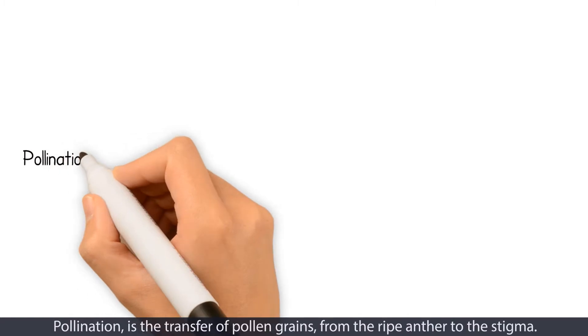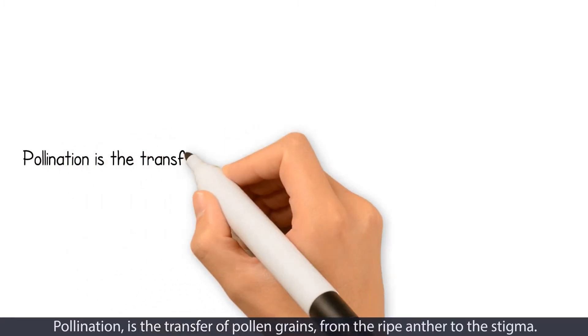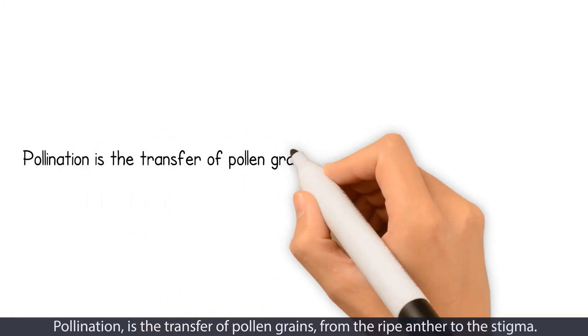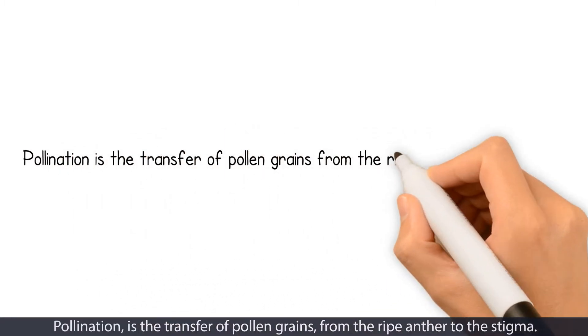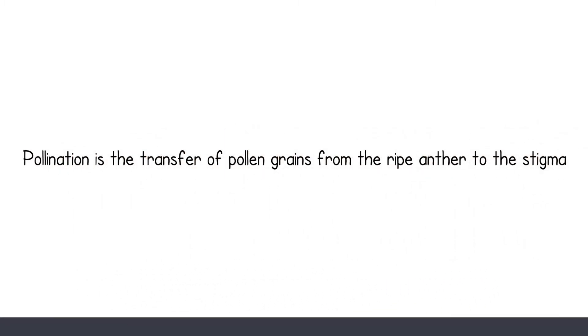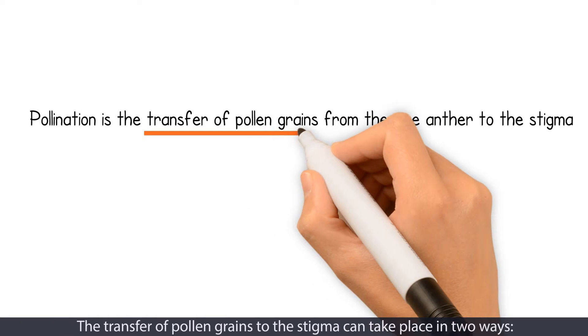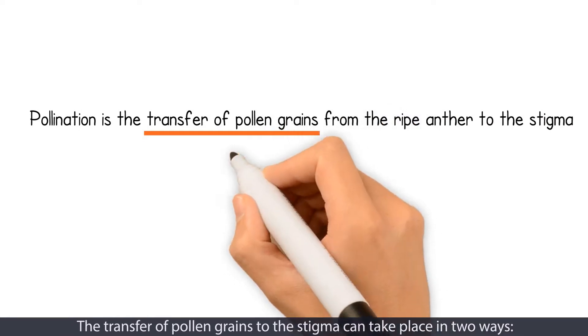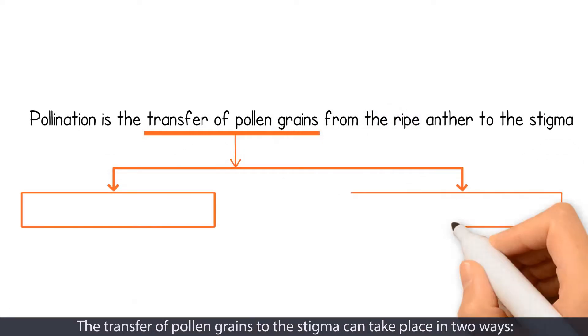Pollination is the transfer of pollen grains from the ripe anther to the stigma. The transfer of pollen grains to the stigma can take place in two ways.